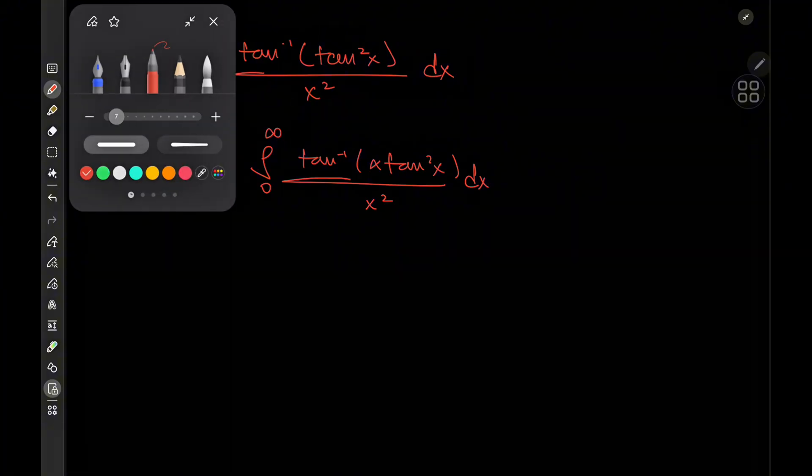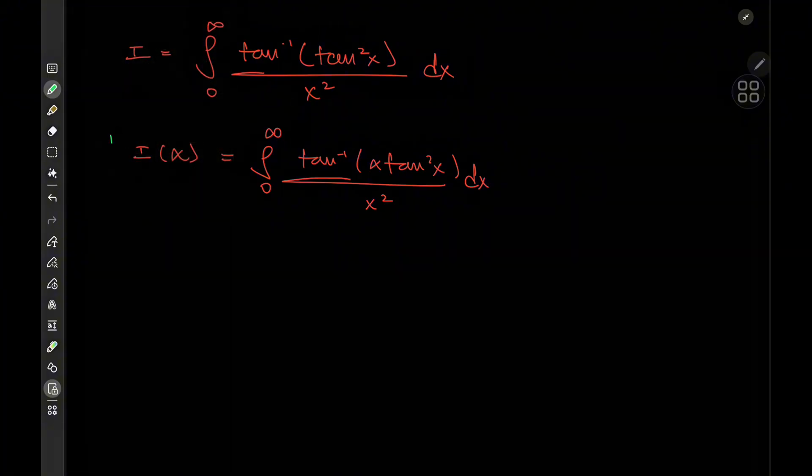And you guessed it, we'll try to differentiate this thing because the derivative of arctangent is quite nice to work with. So we have I prime of alpha on the left, and on the right we have the integral from zero to infinity of the partial derivative with respect to alpha, on switching up the order of the derivative and integral operators, of course, of arctangent of alpha times tangent squared x over x squared dx.